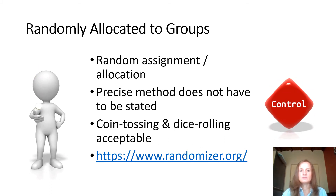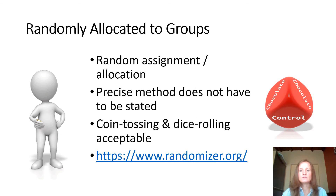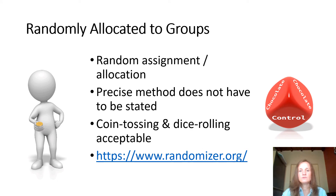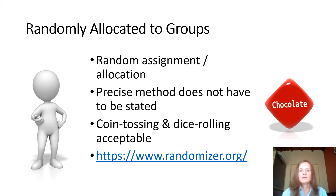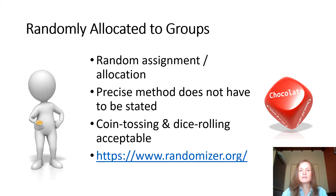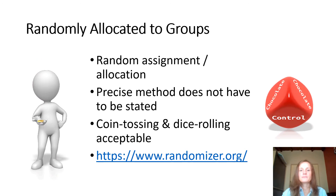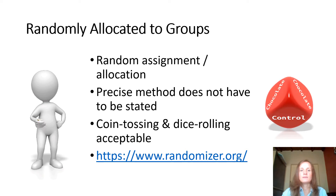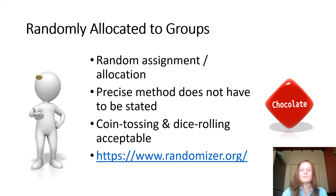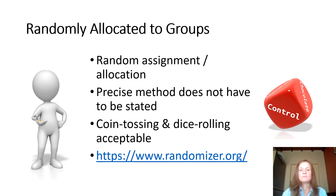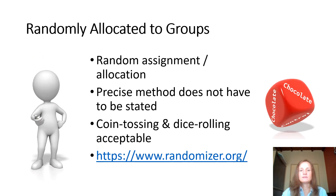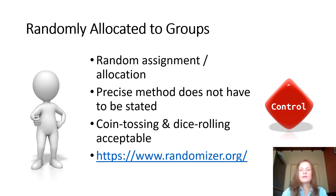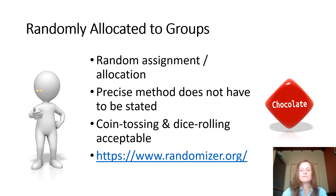As explained earlier, randomly allocating participants into groups is important to reduce selection bias. By randomly allocating participants to groups, we give each participant an equal chance of being assigned to a group, be it the experimental group or the control group. You may read an article where the precise method is not stated — so as long as the article mentions that participants were randomly assigned to groups, then we are happy. Both coin tossing or dice rolling are acceptable methods to use, but there may also be other methods. For those with a research interest, go and play around on randomizer.org, a very useful tool.